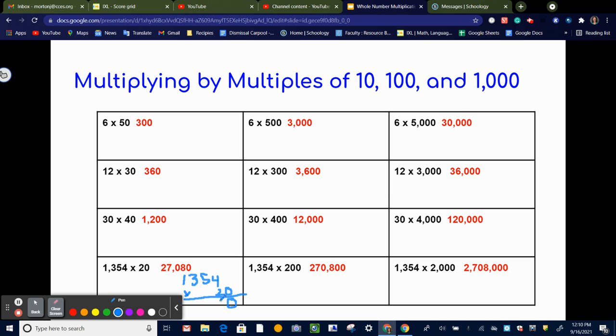And then you're just multiplying 1,354 by 2. So 2 times 4 is 8. 2 times 5 is 0. Here's 1. That would be 7. That would be 2. We get 27,080.